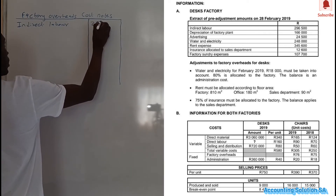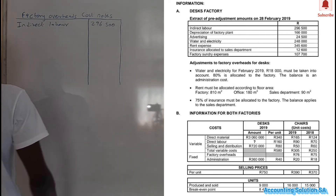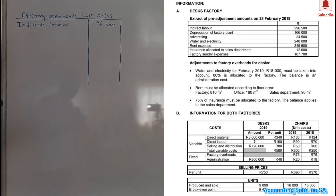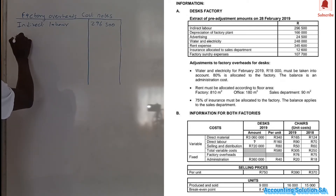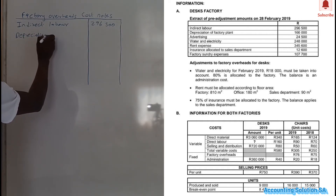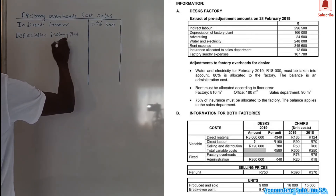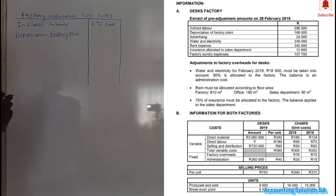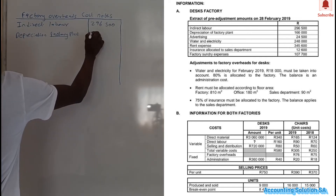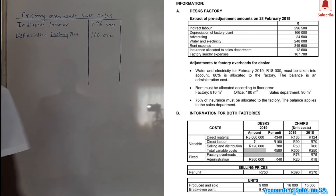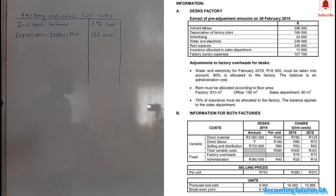Indirect labor amount is 296,500. Then depreciation of factory plant — the amount is 166,000 and there's no adjustment related to it, so we just write it as is. Depreciation on factory plant falls under factory overhead because it's related to the factory. Remember, under factory overhead you put everything that is an indirect cost as long as it's related to the factory — 166,000.